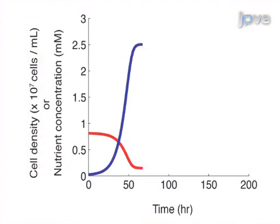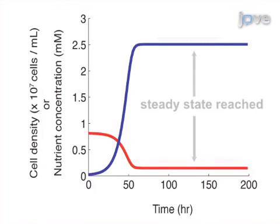The use of these equations allows for the prediction of a single, non-zero, stable steady state at which cell and nutrient concentrations are constant and the specific growth rate of cells is equal to the rate at which the cells are removed.